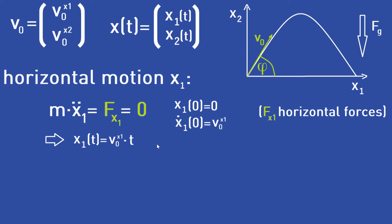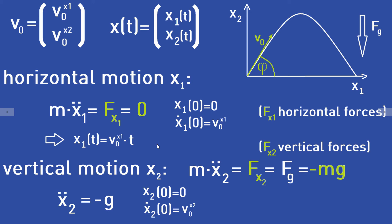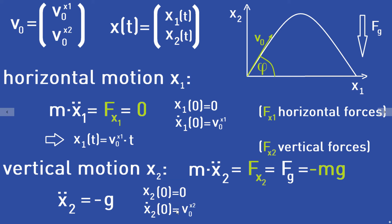Now we consider the vertical motion x2. We need the forces in vertical direction — the only force is gravitation. Using Newton's second law, m times the second derivative of x2 equals the vertical forces, which is just the gravitational force: minus m times g. We already know this equation from the beginning of the video, where we considered a particle falling from height h. The starting conditions are a bit different here, but you should be able to solve this yourself.